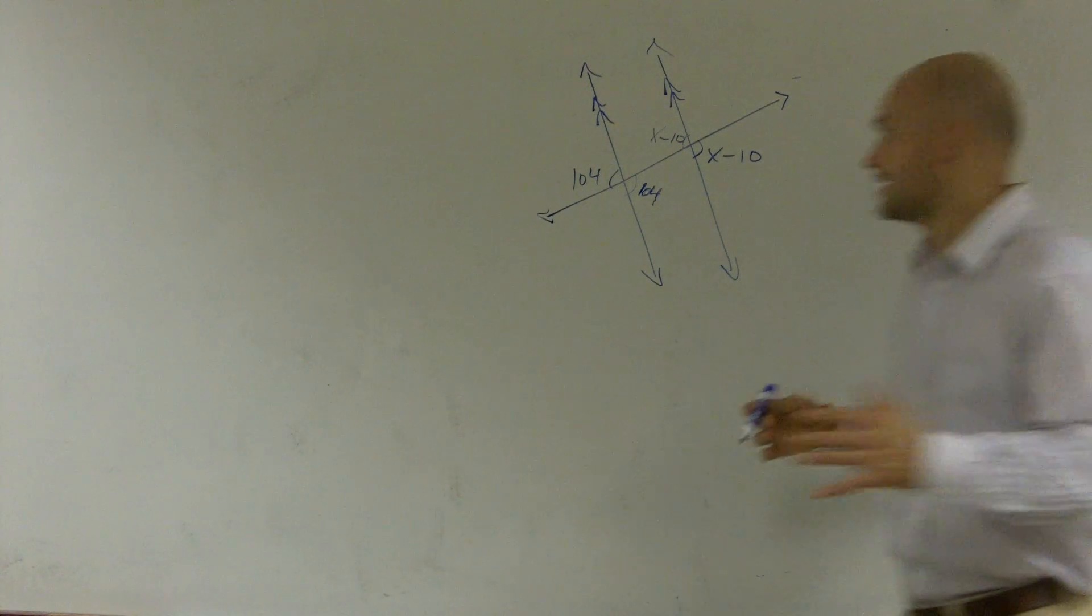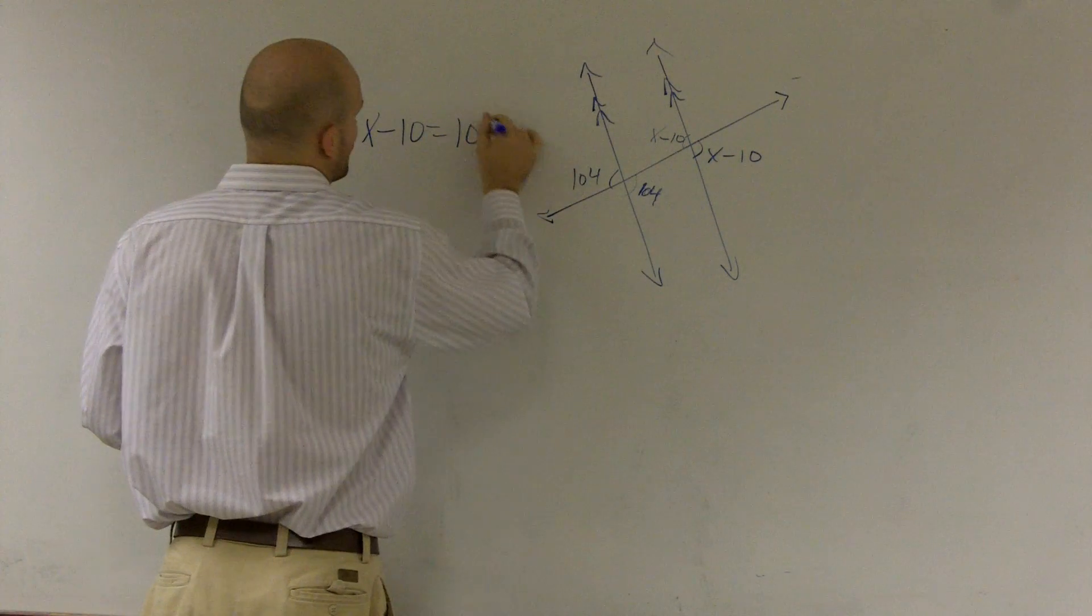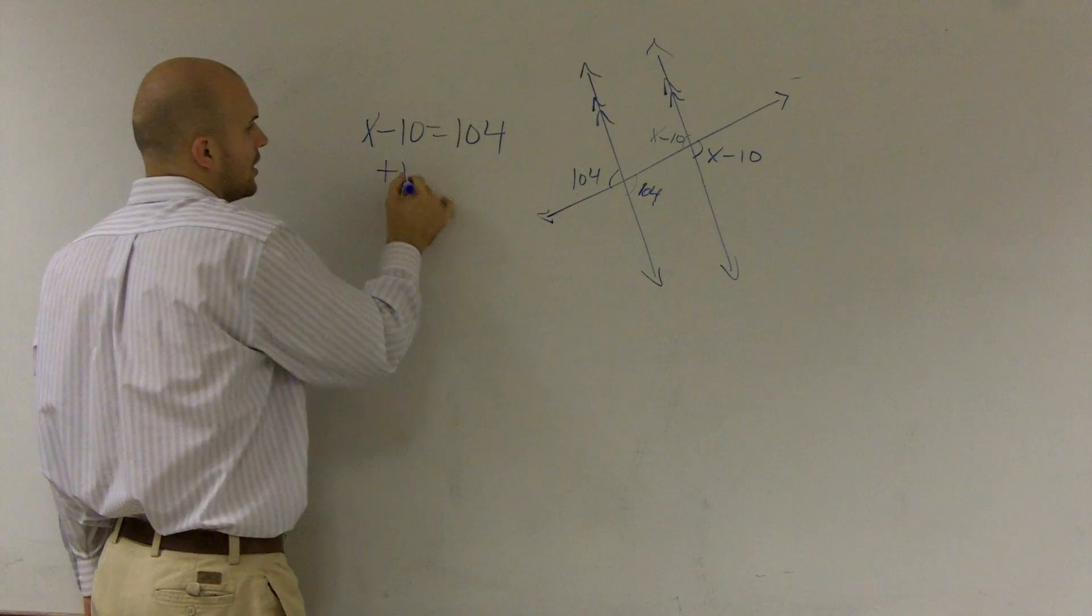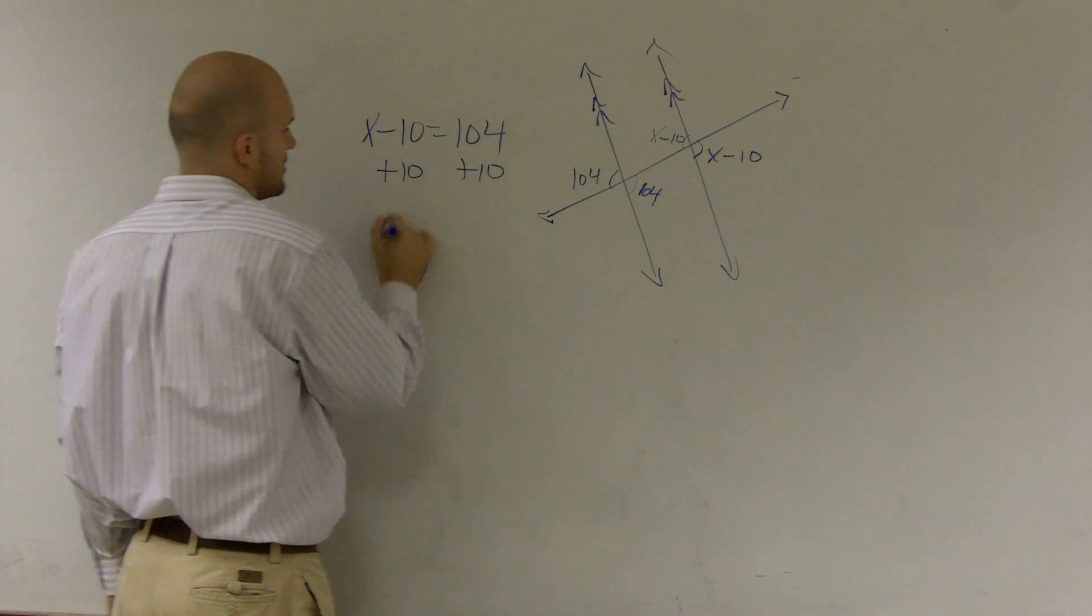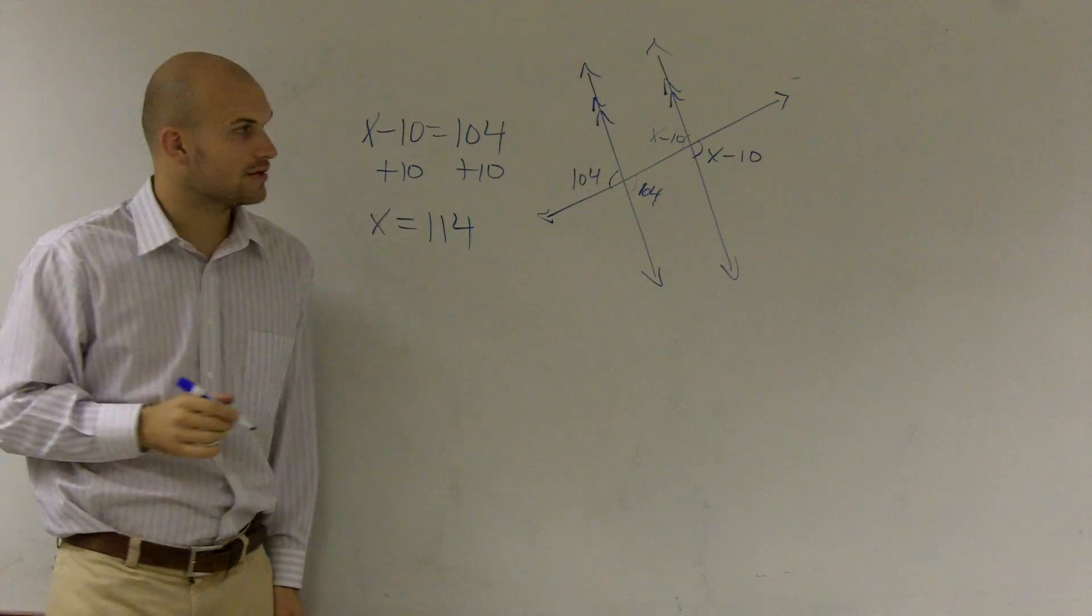Either way you want to look at it, we're going to have an equation x minus 10 is equal to 104. So then, to solve for x, I'll add a 10 on both sides and x equals 114. And that's how you solve this problem.